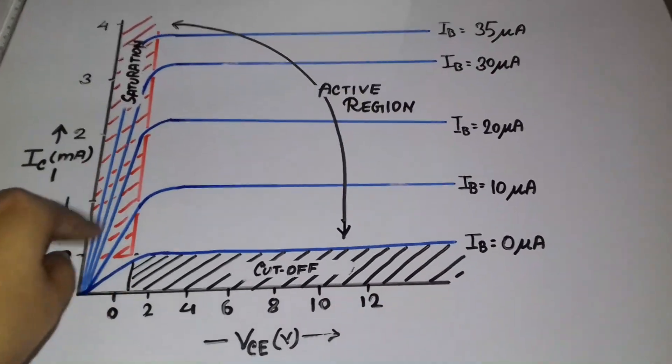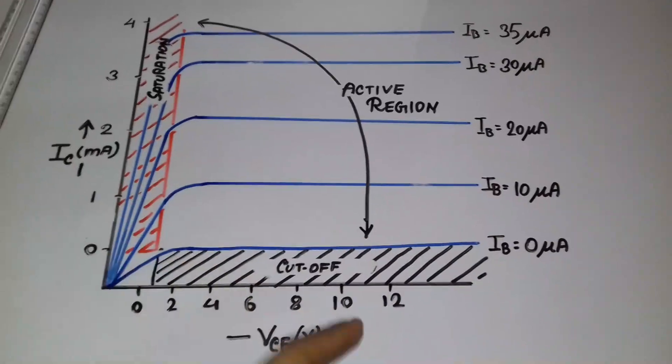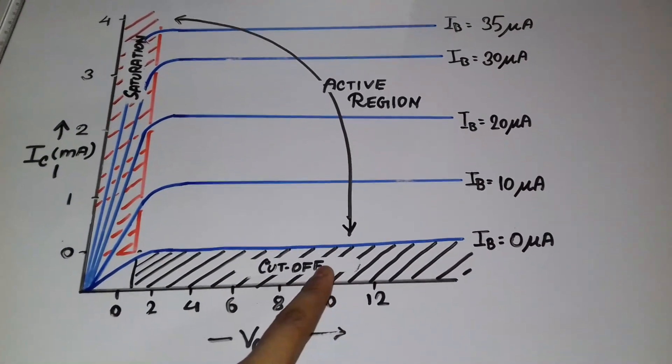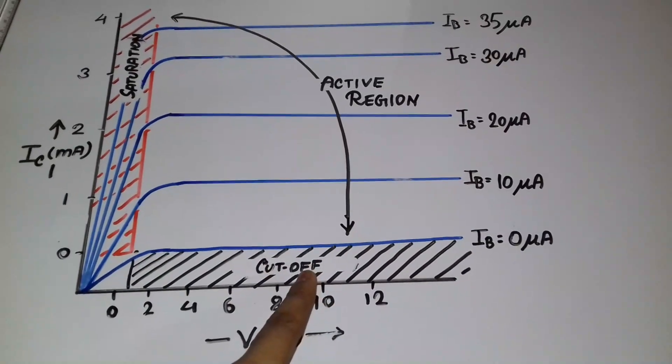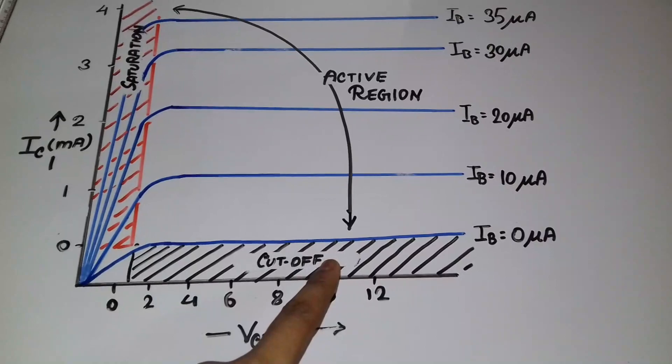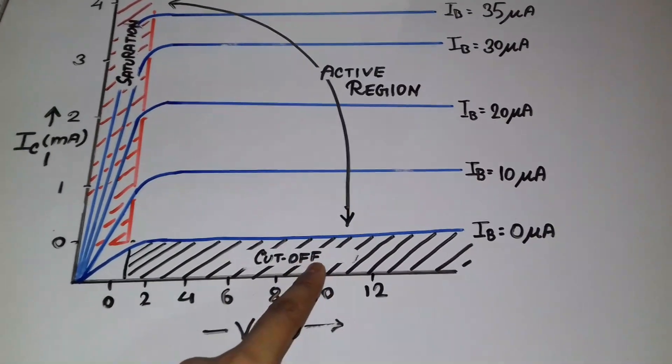The saturation region... In the cutoff region, both junctions, that is the collector-base junction and the emitter-base junction, both junctions will be at reverse bias. So the transistor will be in the off state.